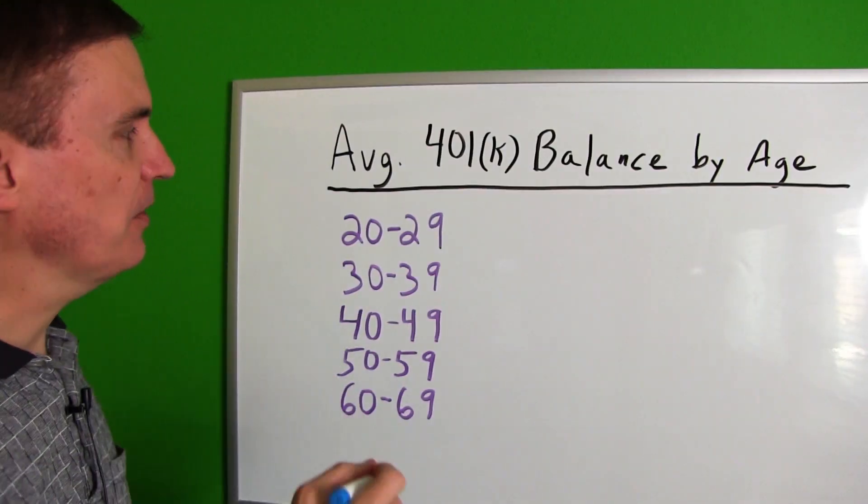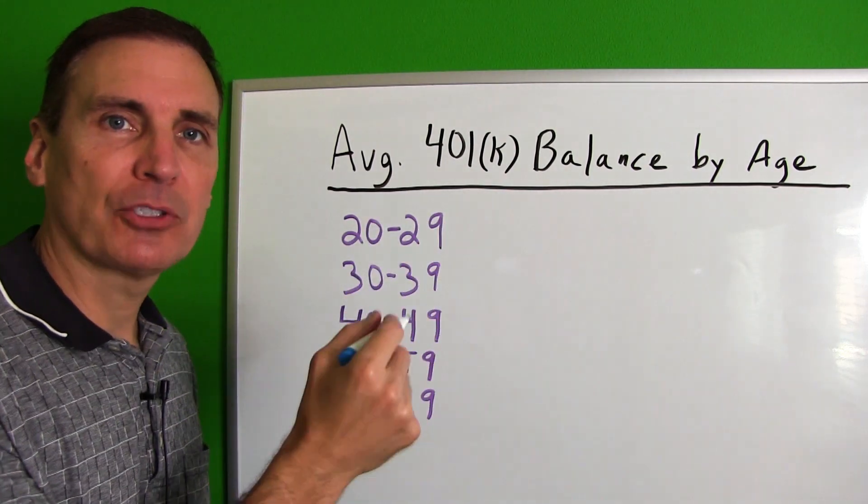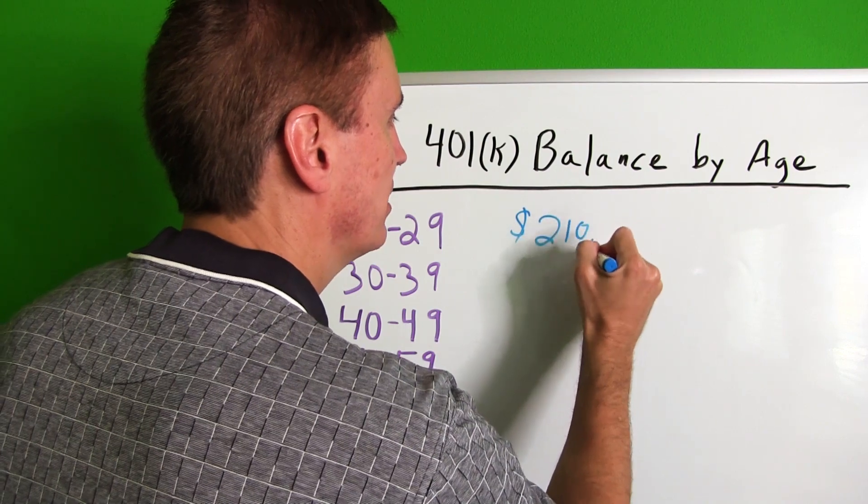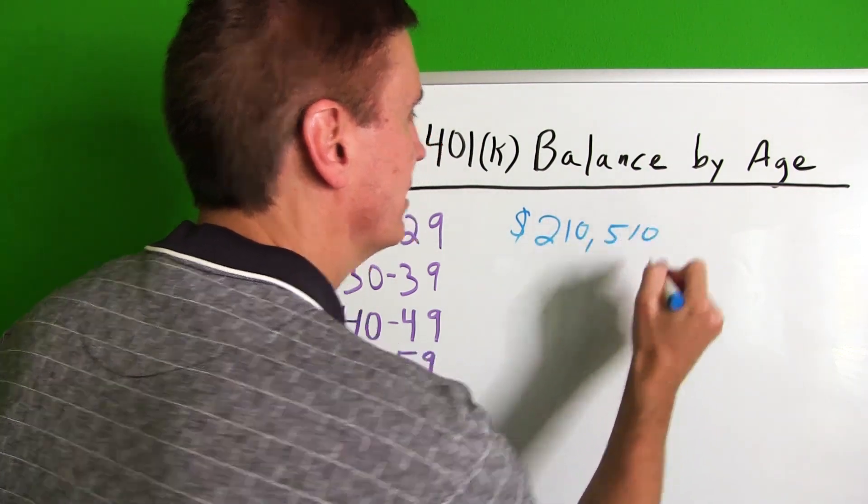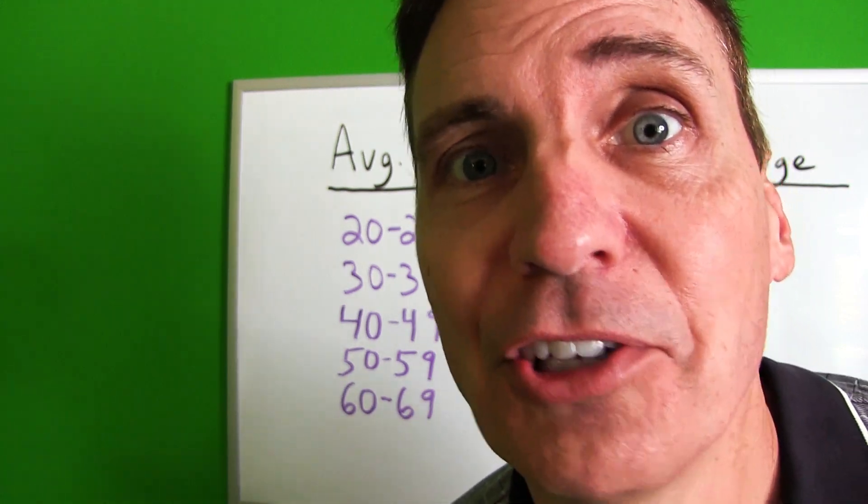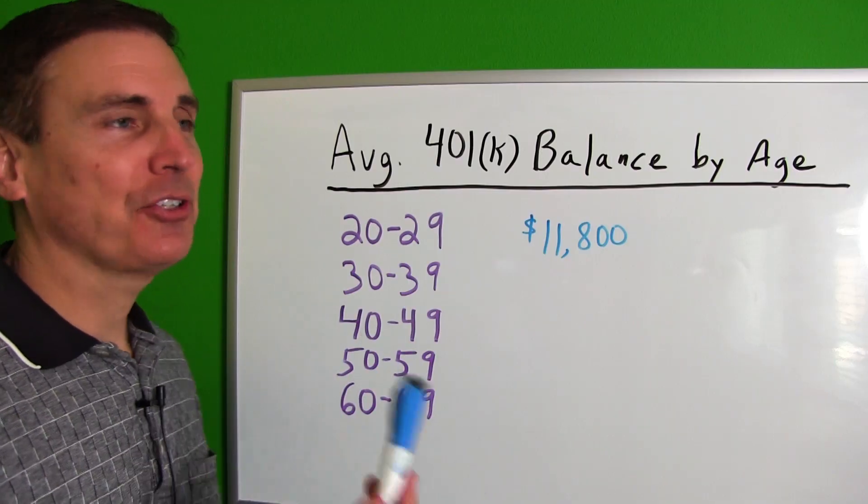So would you believe that the average 20 to 29 year old person that has a 401k balance with Fidelity has an account balance of $210,510? I hope you don't believe that because it's not true. I know this is disturbing to have me this close. I'll back off.